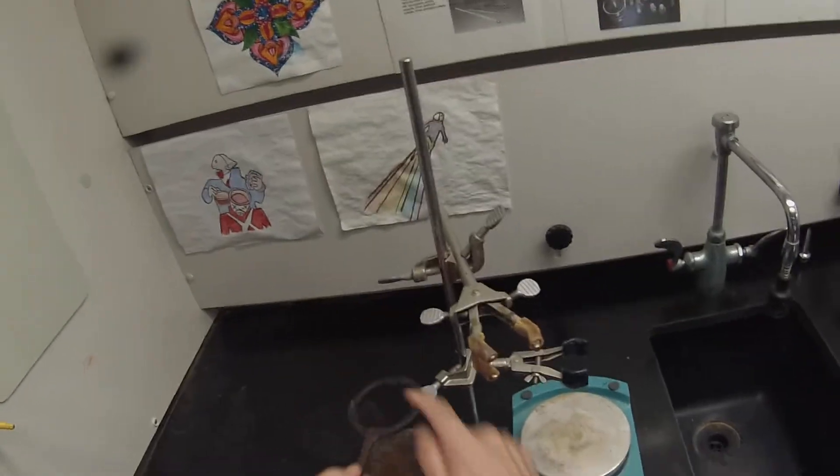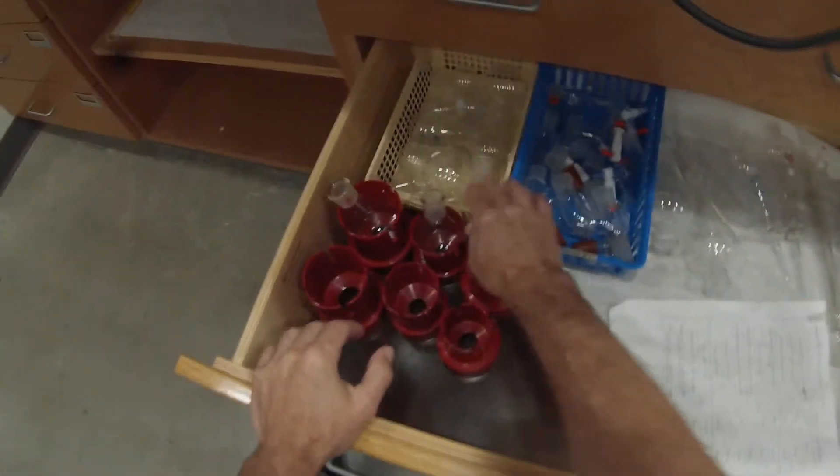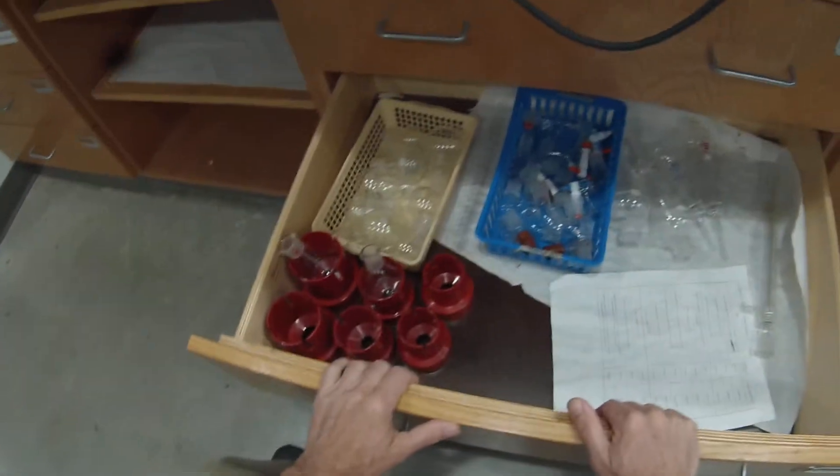The iron ring is going to be used to hold a funnel when we do our filtration, so I'm just setting that aside for now. What I need now is a 50 milliliter round bottom flask. Drawer C, which is the middle left, is the drawer that has all the glassware of the size we're going to be using right now.